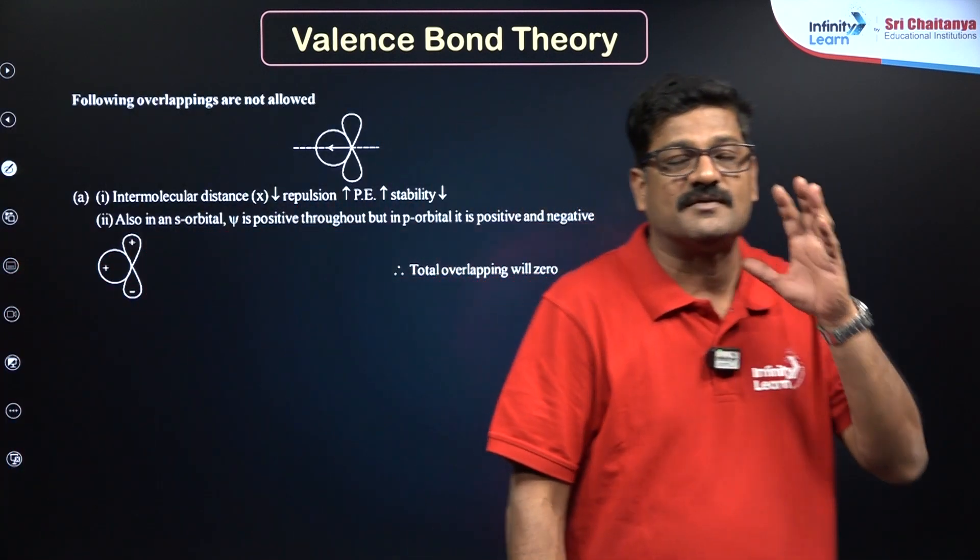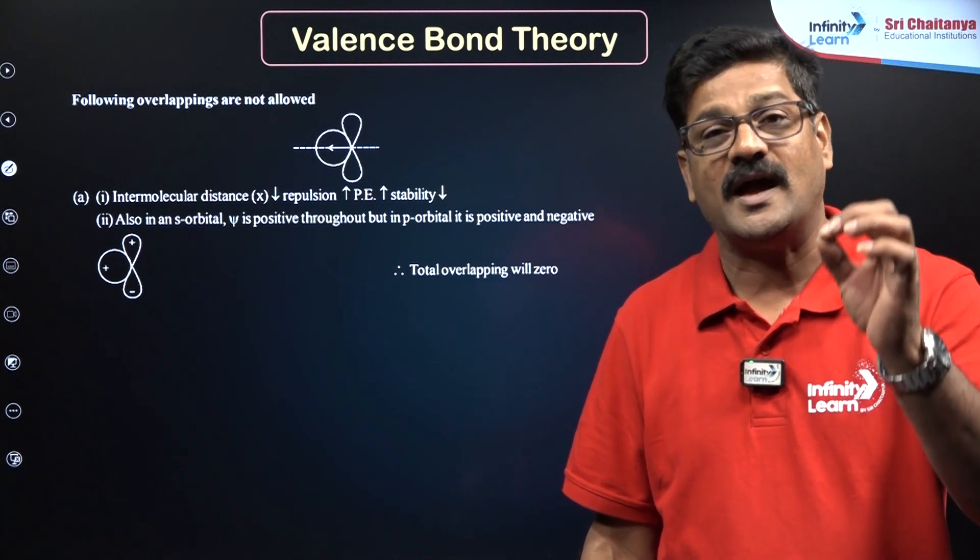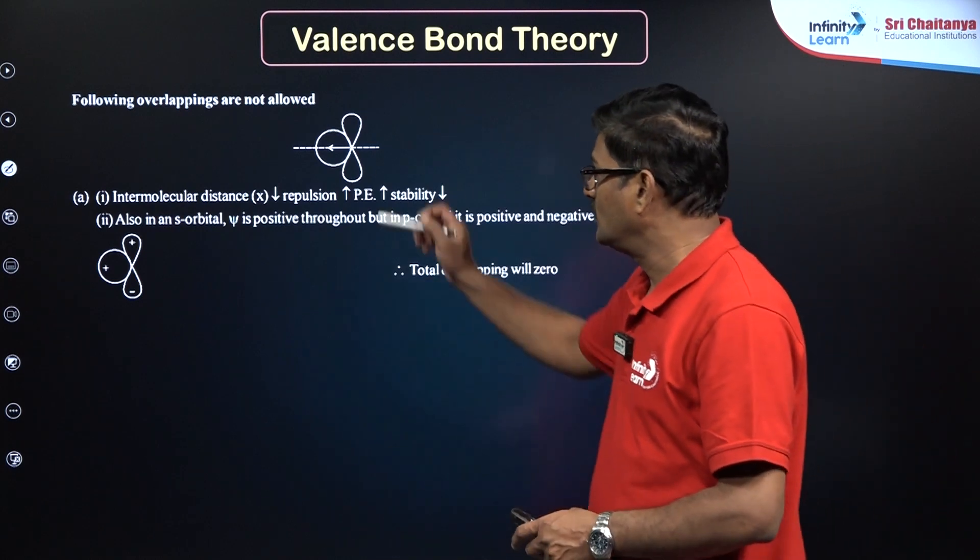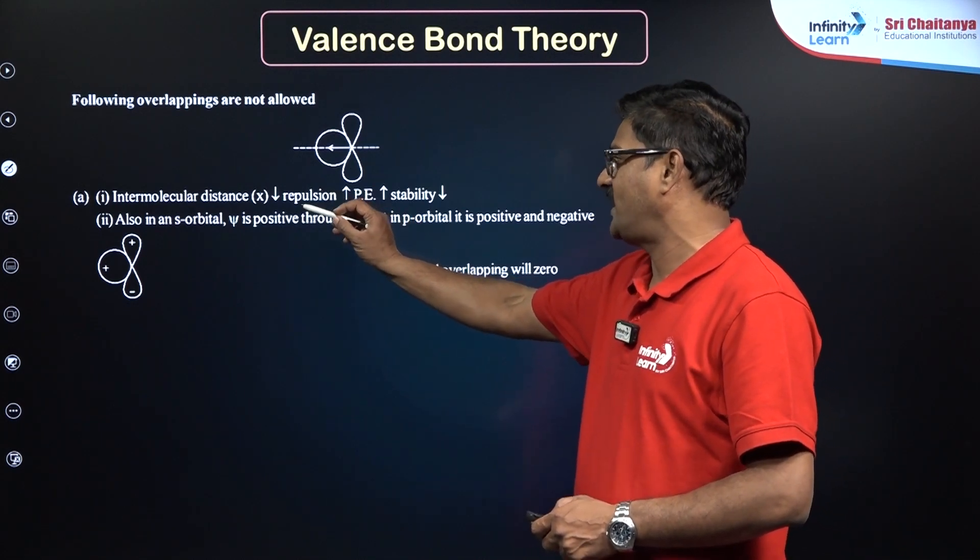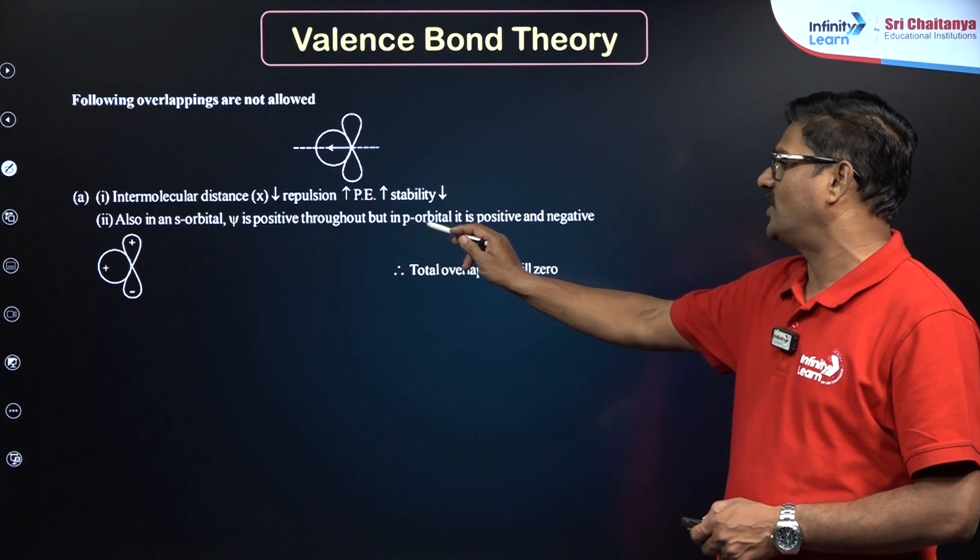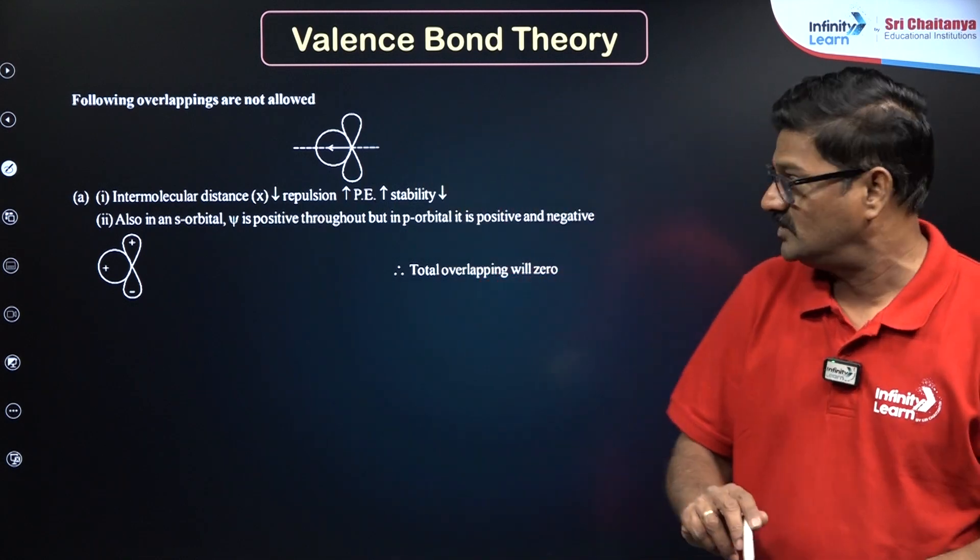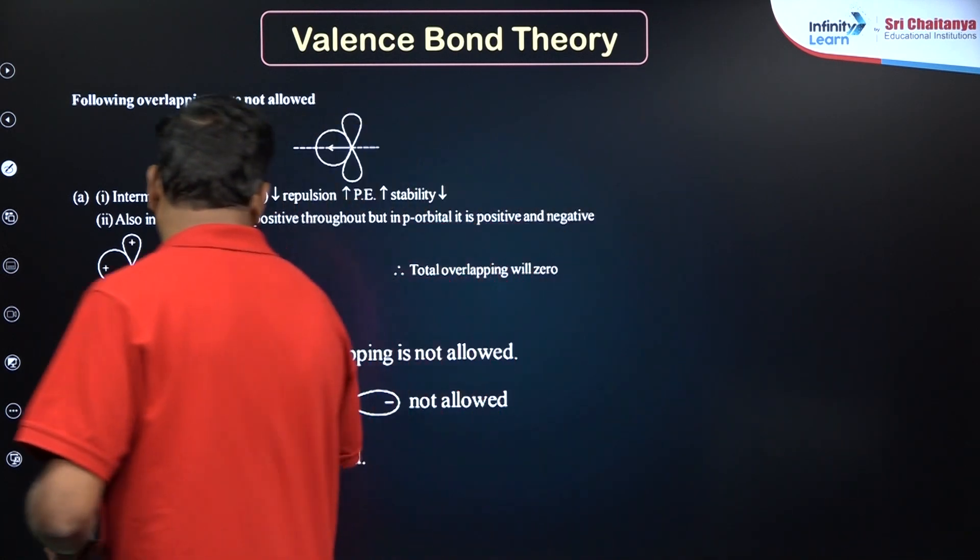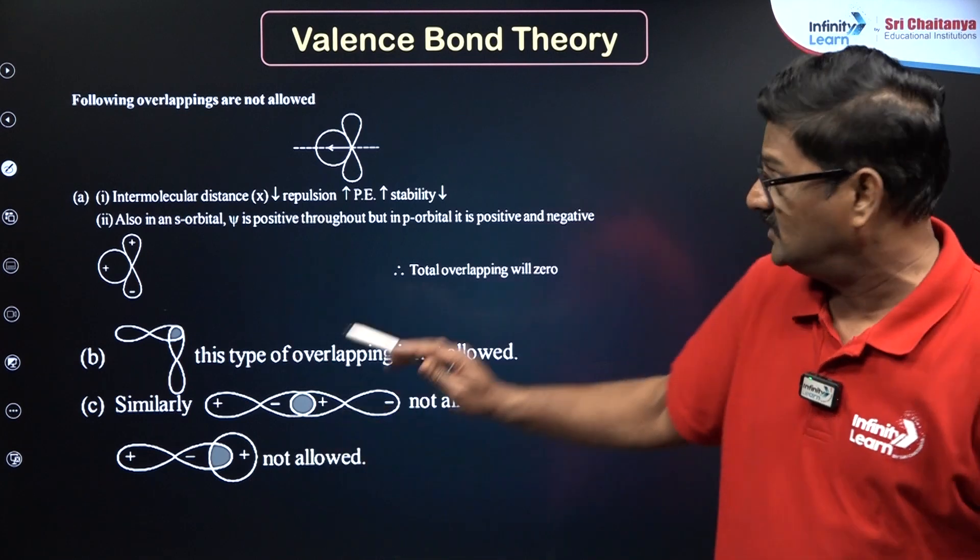And also you can say which of the following overlapping is not possible. Properly, I can say the overlapping orbital should come in appropriate orientation. If the orientation is not good, the overlapping is not taking place. This S orbital and the P orbital cannot have the overlapping in this direction and internuclear axis. If X, repulsion increases, potential energy increases, stability decreases. Also in S orbital, psi is positive throughout, but P orbital is positive or negative, the overlapping is going to be zero in this case, so that it is not at all possible. And also you can see this unusual directional overlapping is not possible. And similarly, minus and plus and minus and plus will never be possible. And it can be between the plus and plus and minus and minus can be possible. And this is very important.